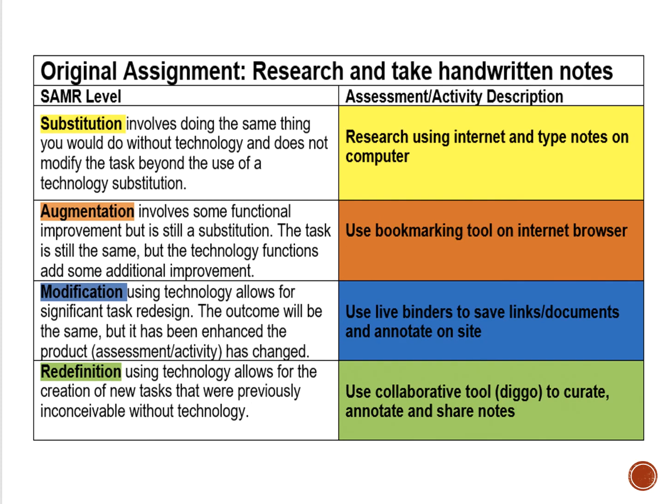The next original assignment is to research and take handwritten notes. A substitution would be to research using the internet and take notes on your computer. An augmentation would be to use a bookmarking tool on the internet browser. A modification would be to use LiveBinders to save links and documents and to annotate information on that site. Redefinition would be to use a collaborative tool like Diigo to curate, annotate, and share notes with other students or faculty.